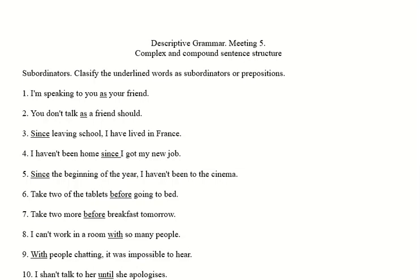Example eight: 'I can't work in a room with so many people.' There's no verb form in 'so many people' — it's clearly a noun construction, so 'with' will be a preposition. Then example nine: 'with people chatting, it was impossible to hear.' Here we've got the -ing form 'chatting,' but we also have a subject 'people chatting.' This is very clearly going to be treated as a verb form — we have subject and verb — which means 'with' here will be a subordinator.